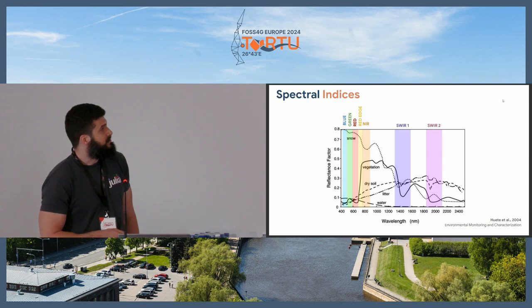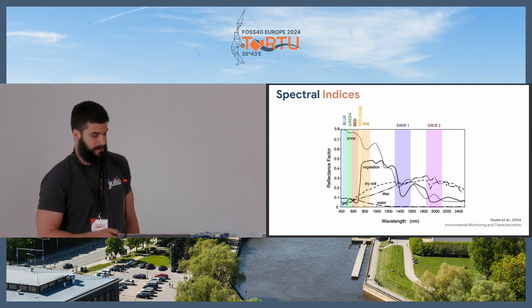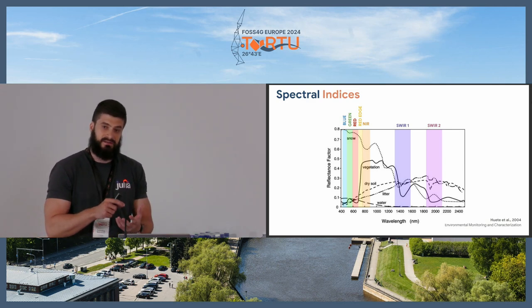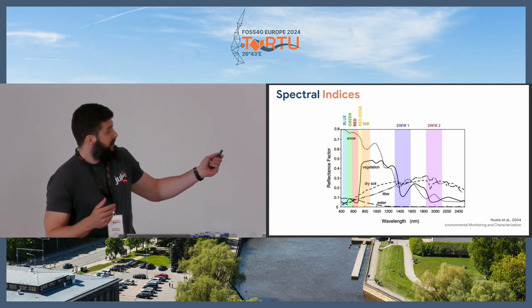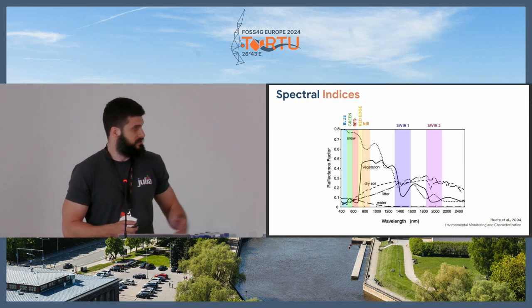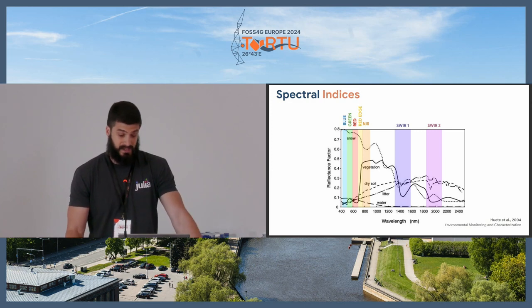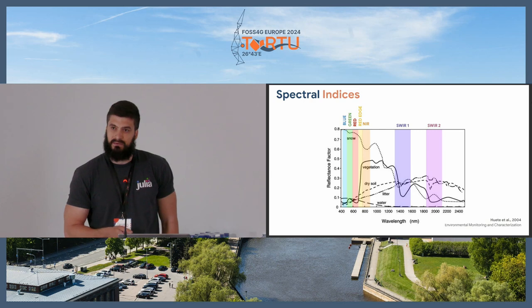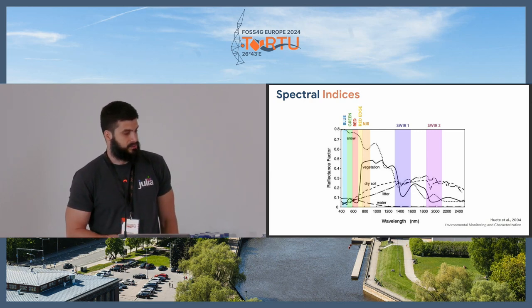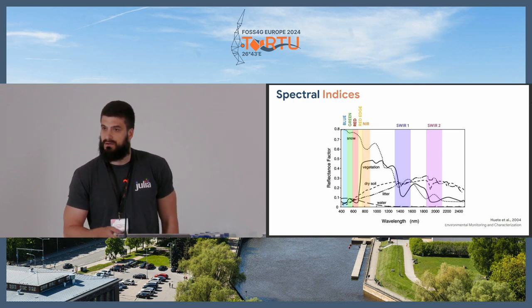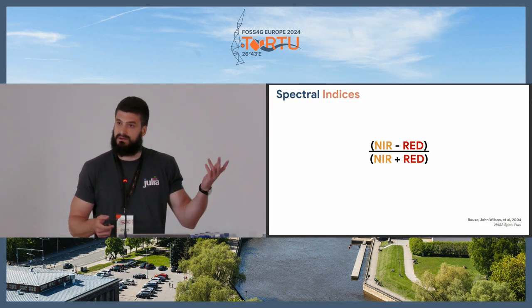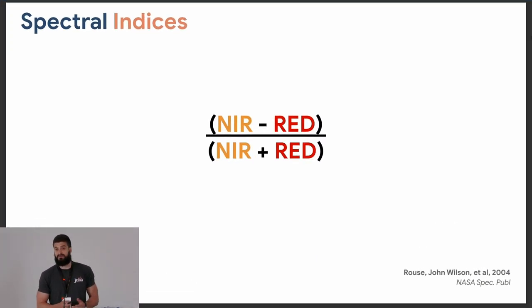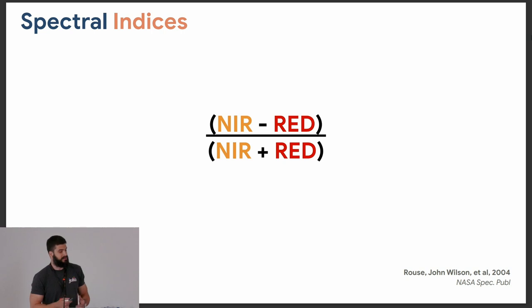Going into more specific definitions: when we talk about reflectance values, every surface material has some reflectance properties observable over different wavelengths of the color spectrum. On the left side you can see the observable color spectrum, but generally we can observe more than just green, red, and blue — also near infrared and short-wave infrared with certain recent satellites or optical sensors. Through these reflectance values, we can obtain mathematical expressions, and the most famous for vegetation is the NDVI, or Normalized Difference Vegetation Index, obtained from the near infrared and the red band.